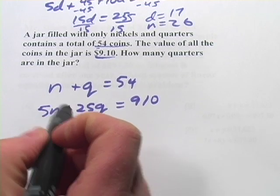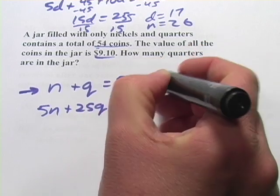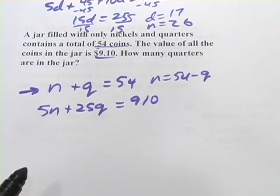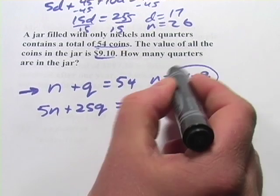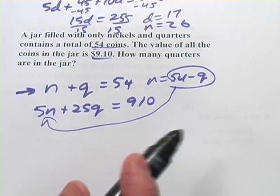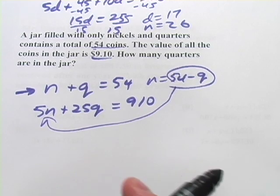So what I'm going to do here is solve this top equation for n, just by subtracting q from both sides. So you get n equals fifty-four minus q, and then I'm going to substitute that in down here for n. Then we'll have one equation with just q as our variable, and since we're looking for the number of quarters, that'll be the quickest way to get to the answer on this problem.